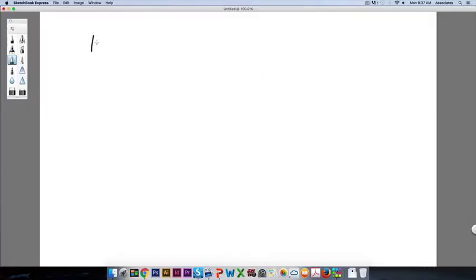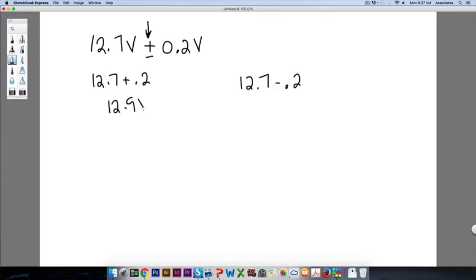So it said 12.7 volts plus or minus two tenths of a volt. Again, this is just like in the bell work. Plus minus is going to give us two values. If I do 12.7 plus 0.2, then I do 12.7 minus 0.2 volts. So here I get 12.9 volts, and here I get 12.5 volts. So we're pretty sure that our answer will be someplace in that range from 12.5 volts to 12.9 volts.